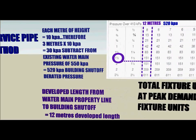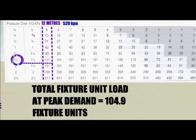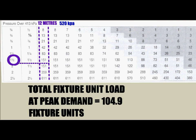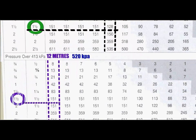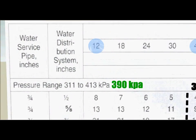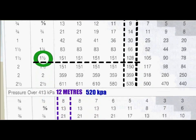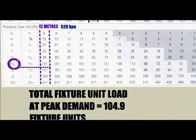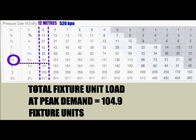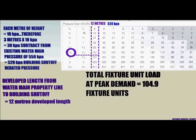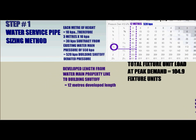This 520 kPa will be the pressure we use on the table. Scroll over to your table and look under pressure over 413 kPa because ours is 520 kPa. We will also look at the total developed length of 12 meters, so look at the top of your table under 12. Remember, this developed length is from the property line to the building shutoff. Scroll down and look at 151 — that's the next number higher than our 104.9 total fixture units. Scroll to the left and you will see that the water service size is inch and a half. We have now sized the water service from the property line to the building shutoff. This completes Step 1 of the water service pipe sizing method.